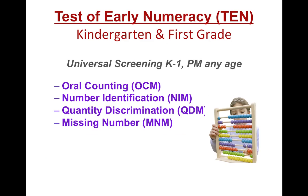There are four AmesWeb 10 probes: the Oral Counting Measure, the Number Identification Measure, the Quantity Discrimination Measure, and the Missing Number Measure. Each of these areas can be used as a universal screener as well as a progress monitoring tool.